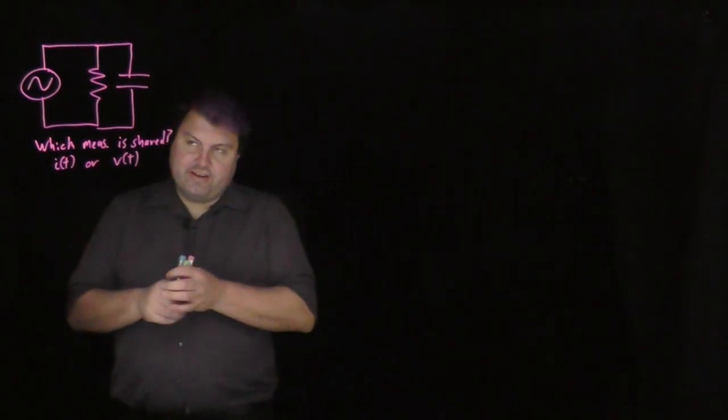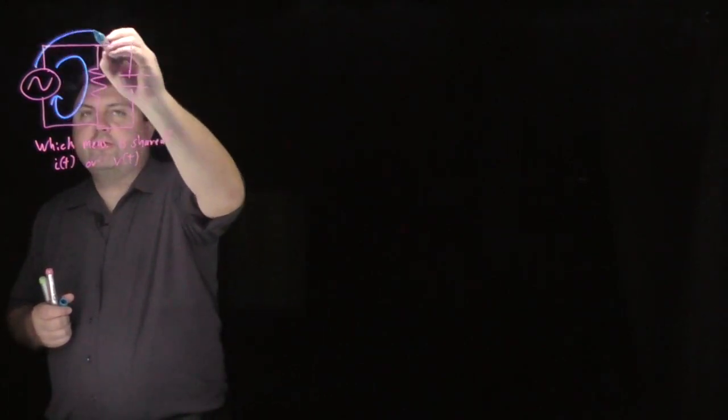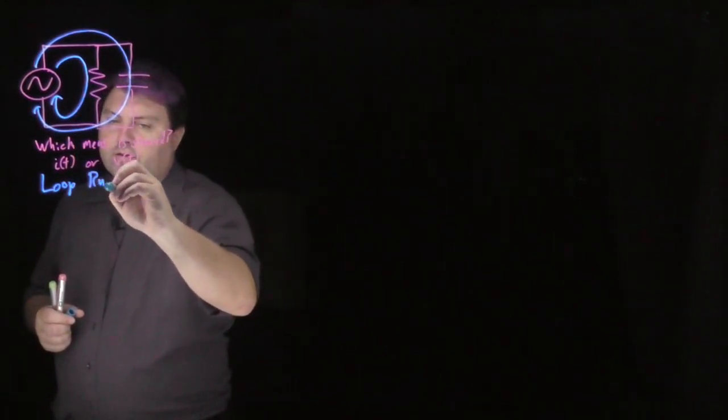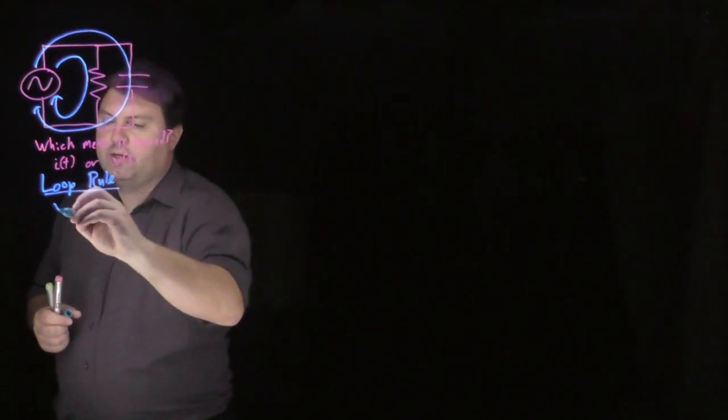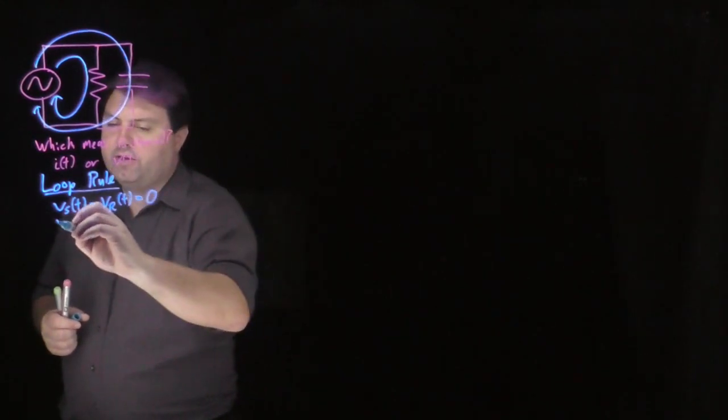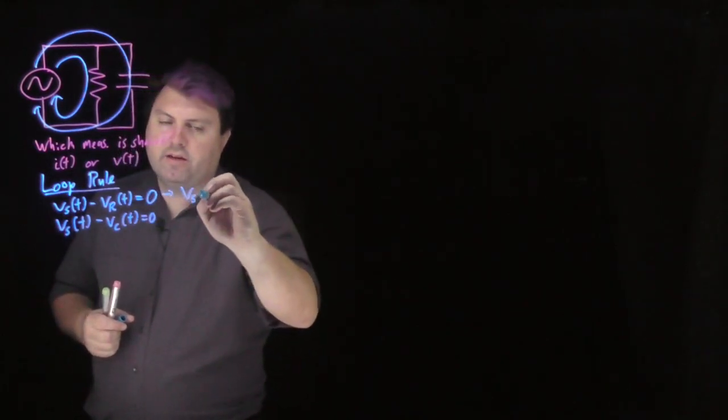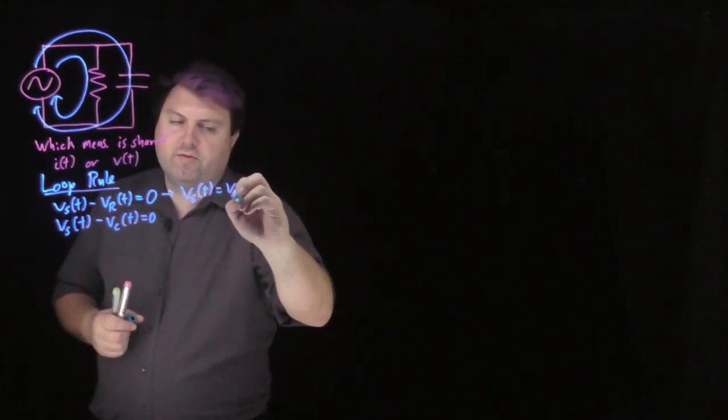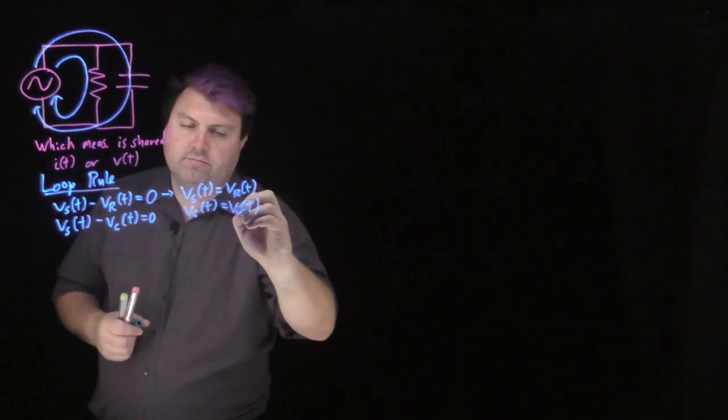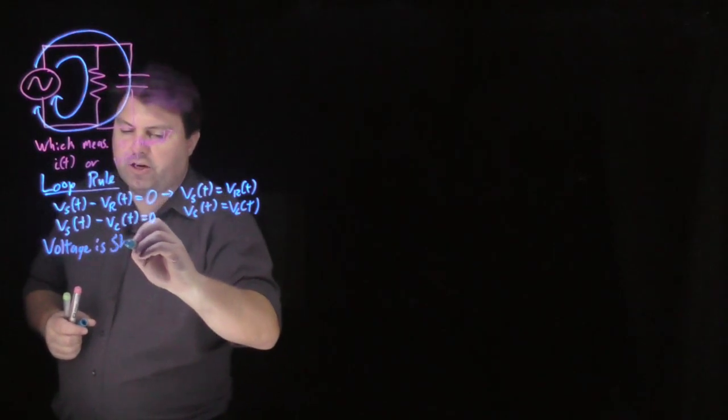All right. So, if we use our loop rule, we will get two possible loops, and this loop rule will give us that Vs as a function of time minus Vr as a function of time is equal to zero, and that Vs as a function of time minus Vc as a function of time is equal to zero, so that Vs of t equals Vr of t, Vs of t equals Vc of t. So we have that voltage is the shared measurement.